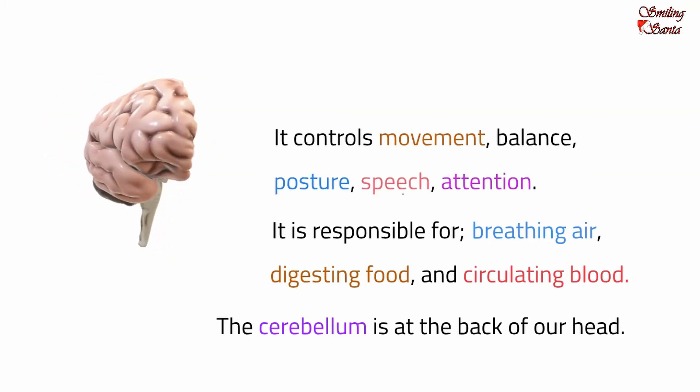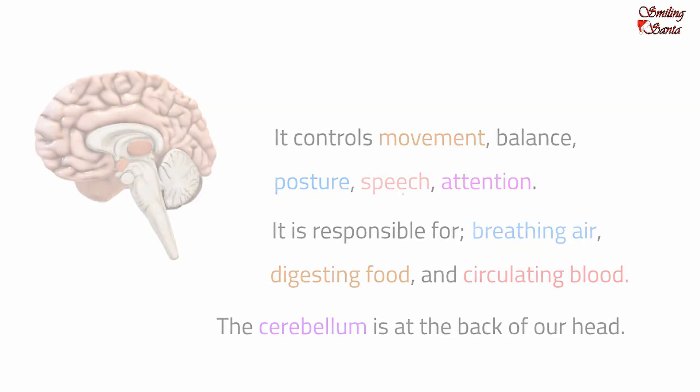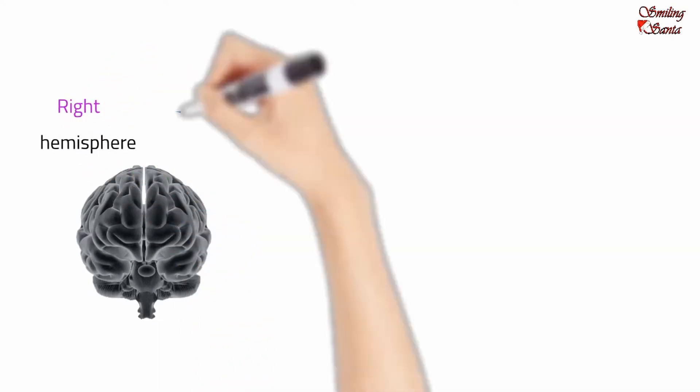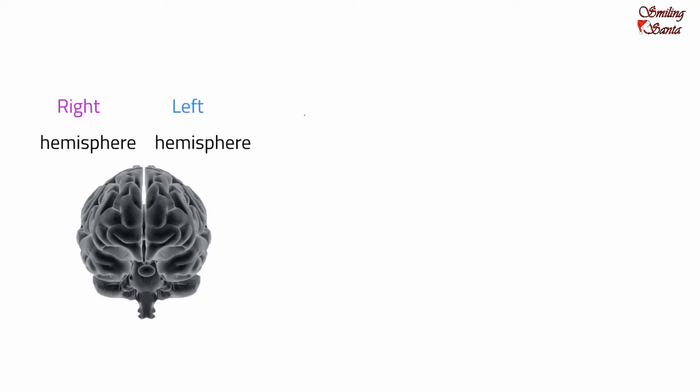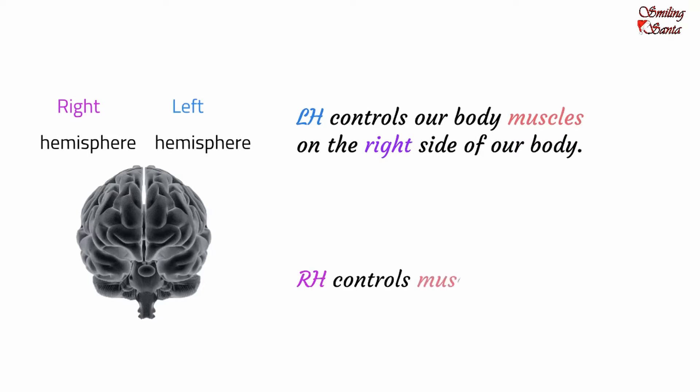The cerebrum is the largest part of the brain and it is divided into two parts: the right hemisphere and the left hemisphere, and they are interconnected by fibers called the corpus callosum. Our left hemisphere controls our body muscles on the right side of our body. Our right hemisphere controls muscles on the left.